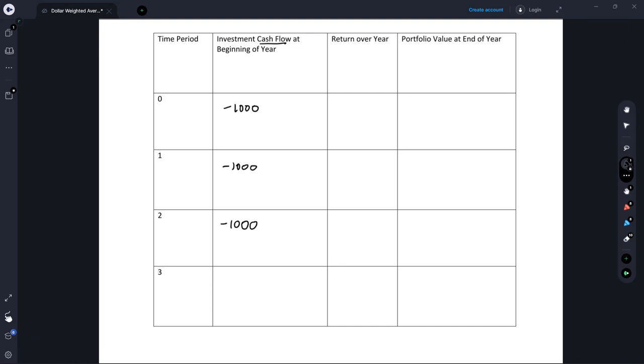Now that portfolio's returns is going to be 10%, negative 3%, and then 6%. So in this last column, we're going to find the portfolio value at the end of the year. So when we first started off, it's fairly straightforward. We contributed $1,000 to our portfolio. That portfolio value grew by 10%. And so at the end of the year, our portfolio had a value of $1,100.